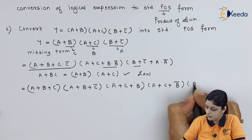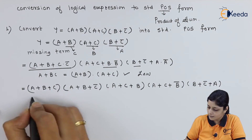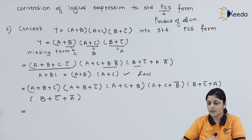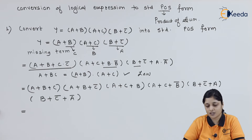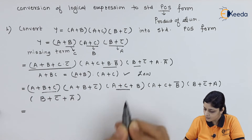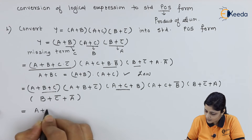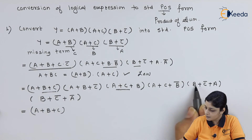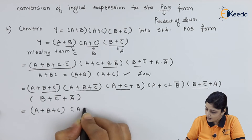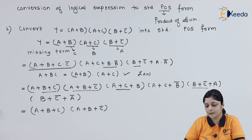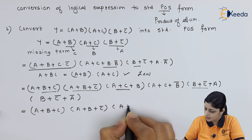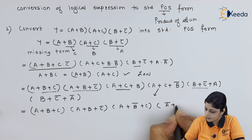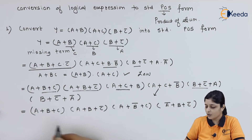Now we concentrate on the third term. Expanding (b plus c̄ plus a · ā) gives (a plus b plus c̄) · (ā plus b plus c̄). Now search for the same terms. Collecting unique terms: (a plus b plus c), (a plus b plus c̄), (a plus b̄ plus c), and (ā plus b plus c̄).